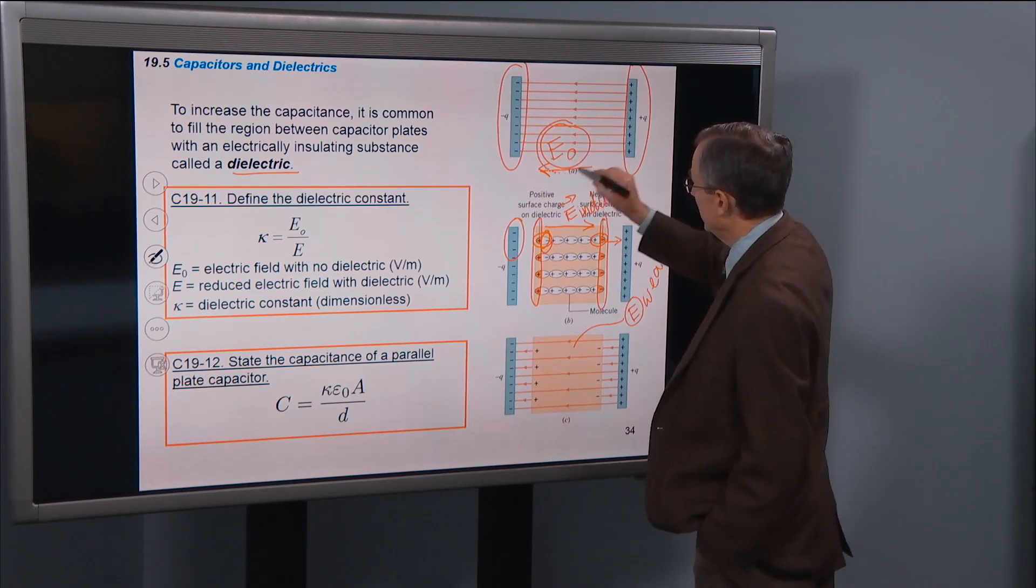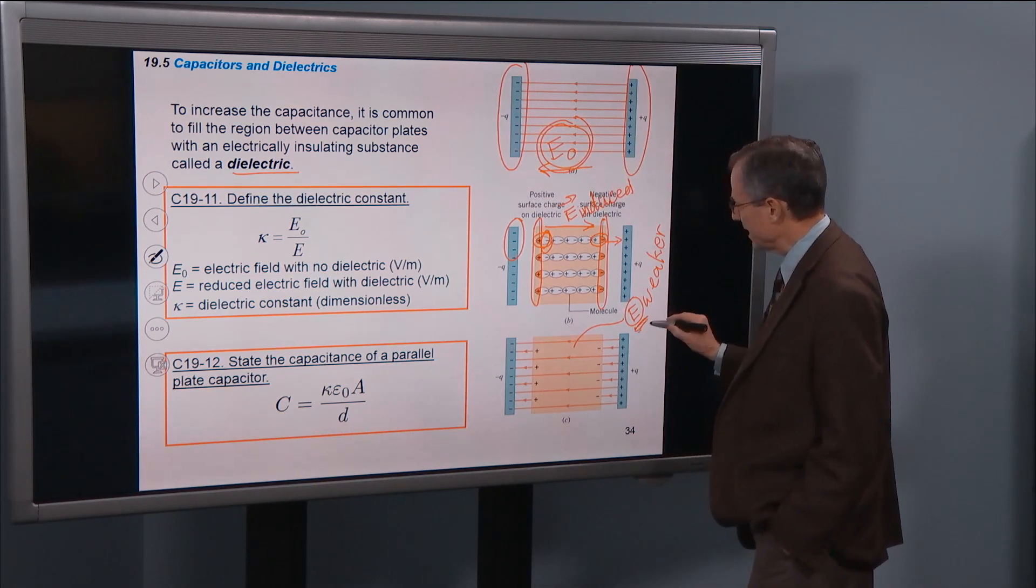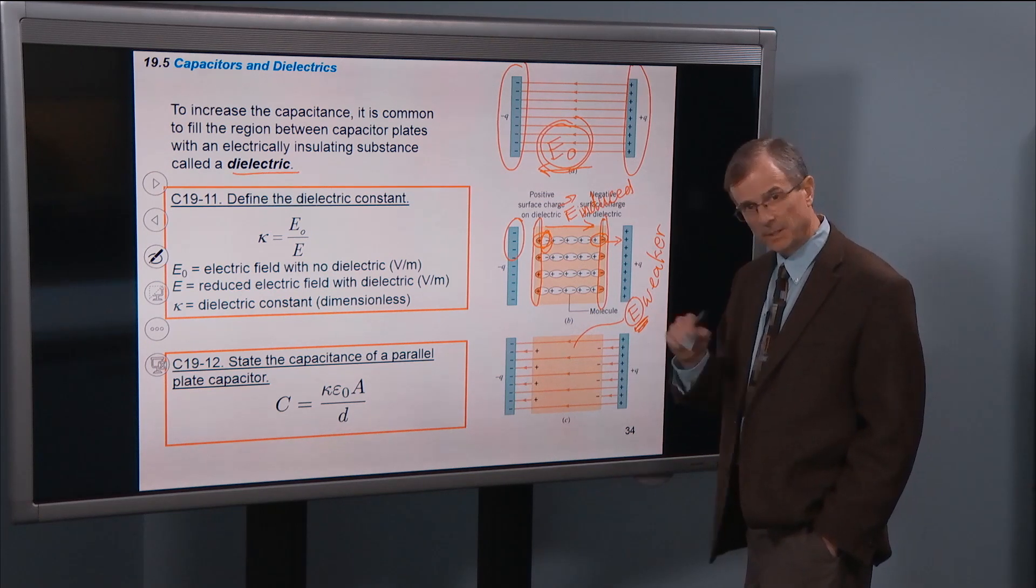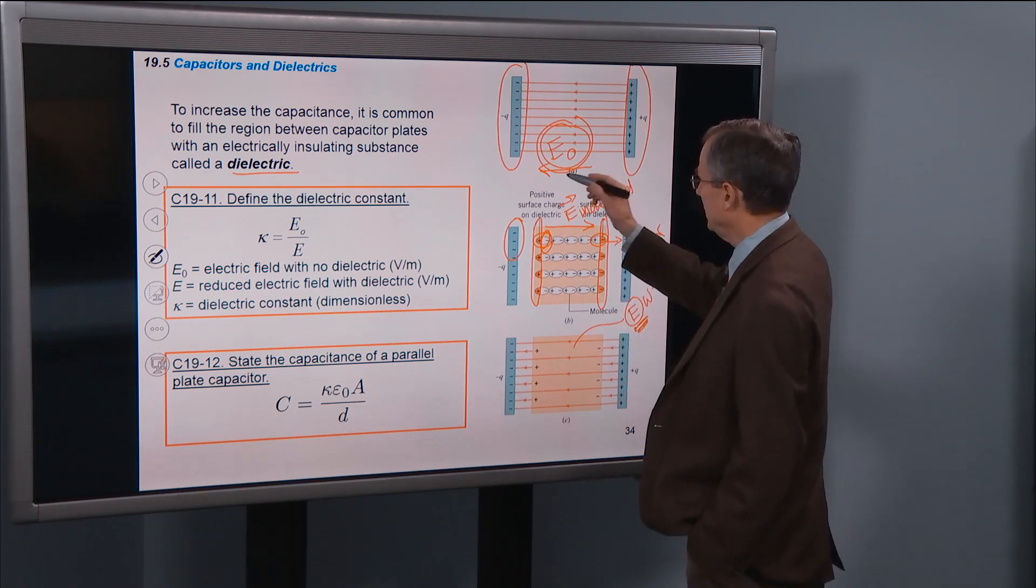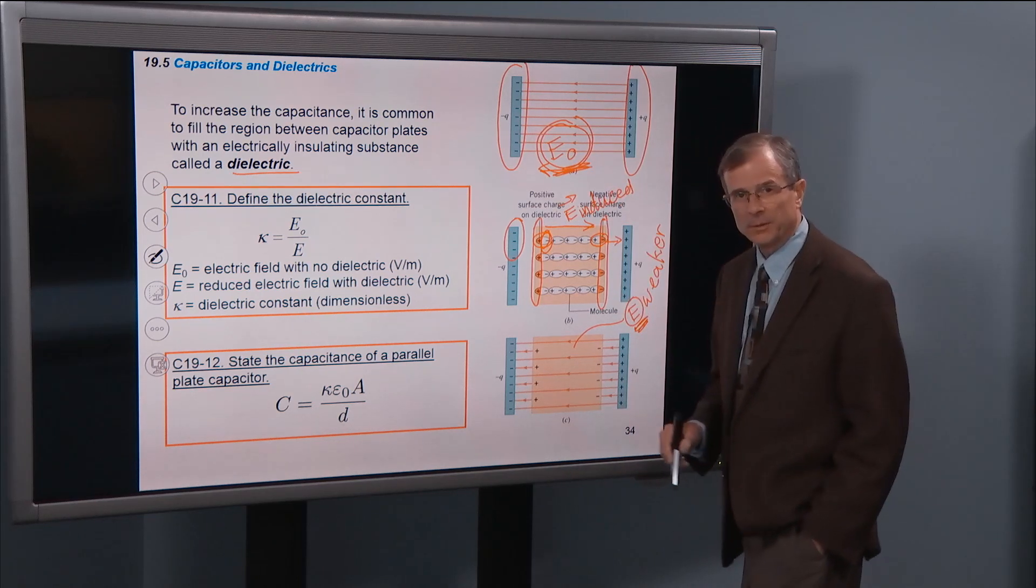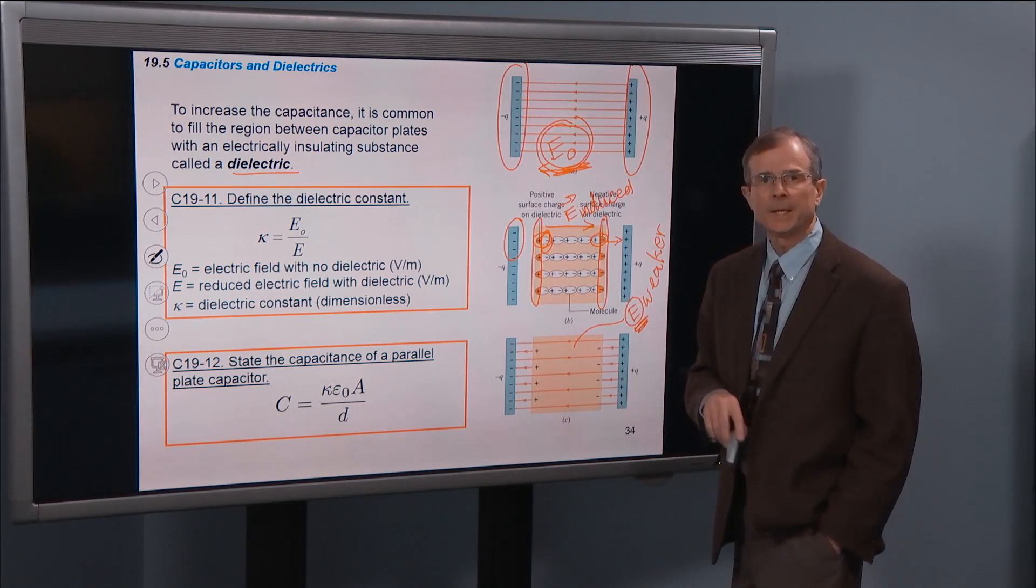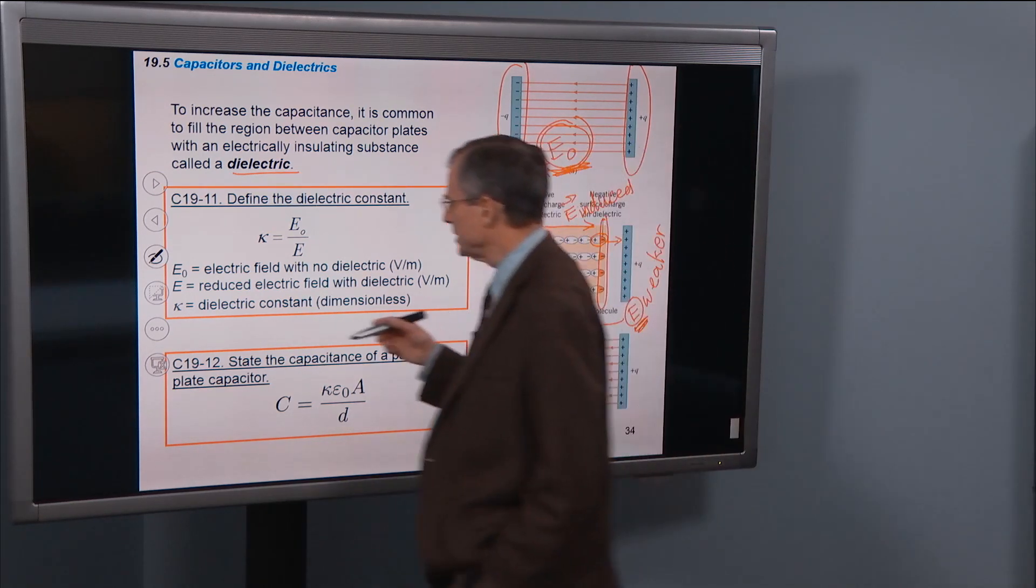We call this E0. So E is going to be less, the magnitude of this electric field inside the dielectric is going to be less, than the magnitude of the electric field with no dielectric present. So that's what these things mean here.